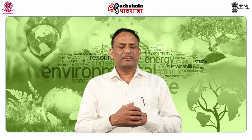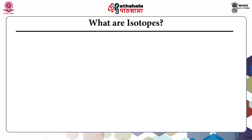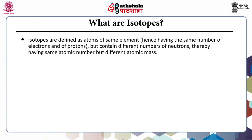Before we move further, let us understand what isotopes are. Isotopes are defined as atoms of the same element having the same number of electrons and protons but containing different numbers of neutrons, thereby having the same atomic number but different atomic mass.